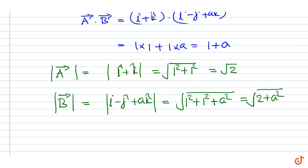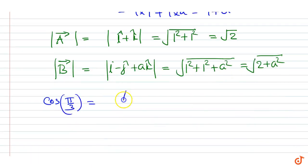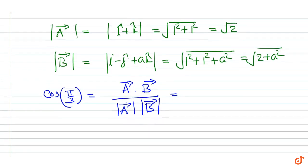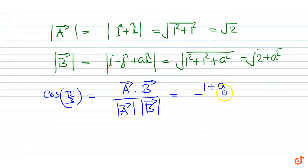It is given that the angle between A and B is π by 3, so cos π by 3 equals vector A dot vector B upon vector A into vector B. This is equal to substituting we get 1 plus a upon root 2 into root of 2 plus a squared.